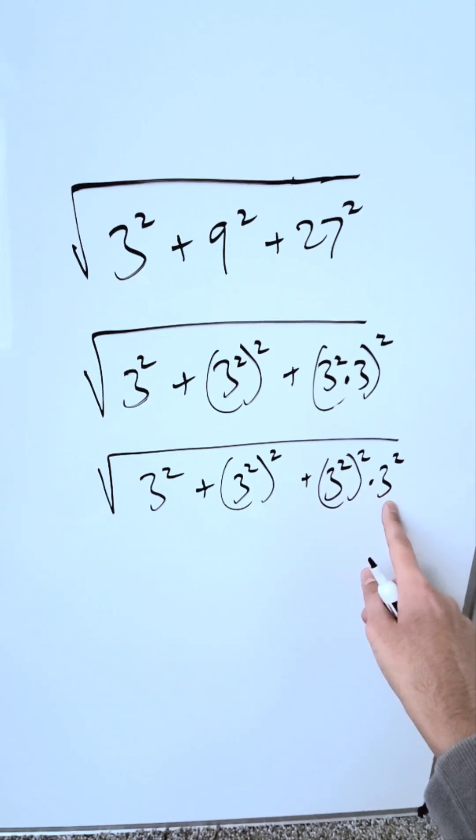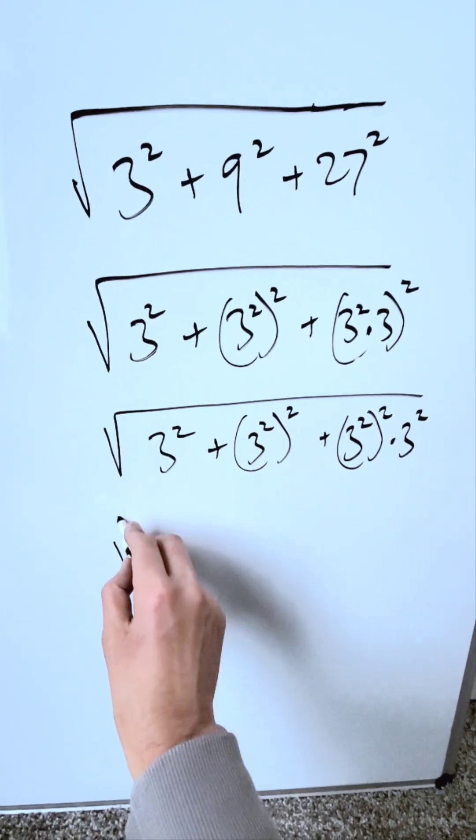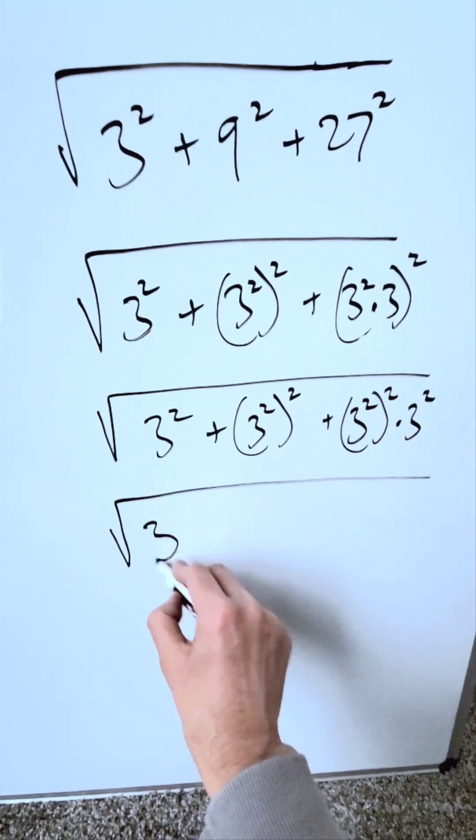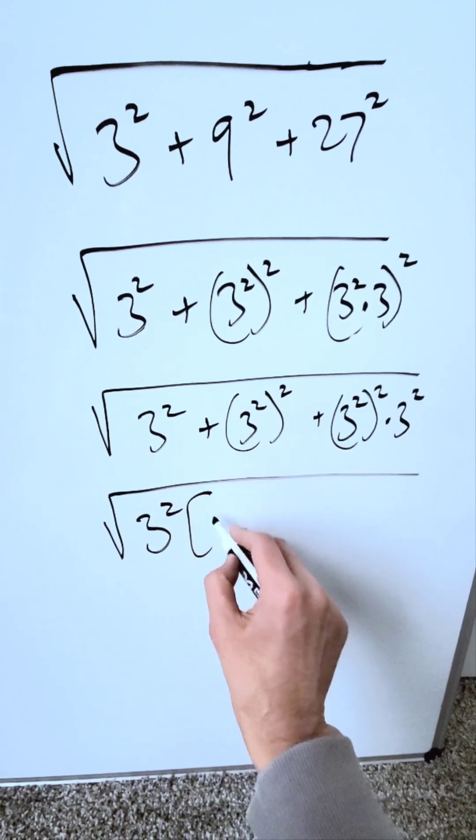I'm looking here at a common term. That common term is 3 squared. What were to happen if I were to isolate it? I would isolate 3 squared. It'll come in this term 1 time.